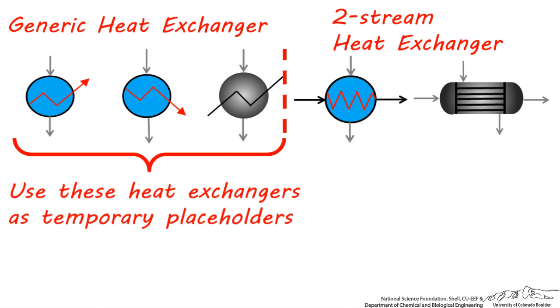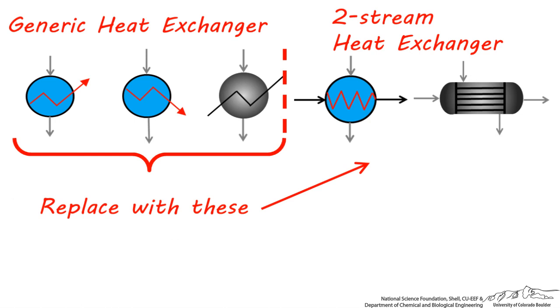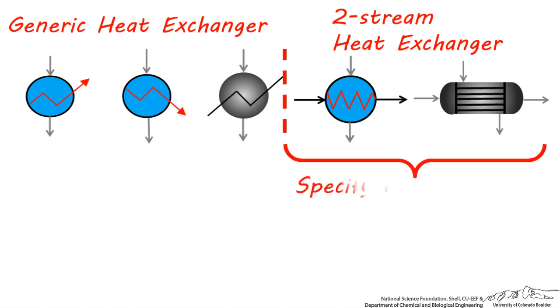Believe it or not, both ChemCAD and Aspen will allow you to heat up a stream to 10,000 degrees or cool down to near absolute zero using a generic heat exchanger like this. It's your job to go back and eventually replace these heat exchangers with ones that are better representations, such as the two stream heat exchangers you see here. You can see with the more rigorous heat exchangers, you actually have to specify two streams coming in and going out, and depending on the properties of these streams, you may not be able to achieve your desired process temperature.